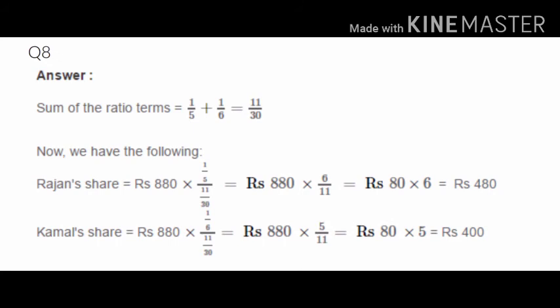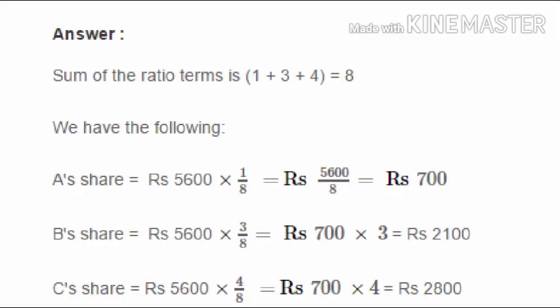Question 9: Divide 5600 among A, B, C in the ratio 1:3:4. Total ratio = 1 + 3 + 4 = 8. A's share = (1/8) × 5600 = 700, B's share = (3/8) × 5600 = 2100, C's share = (4/8) × 5600 = 2800. This is simpler than Q8 — just find each fraction of the total.